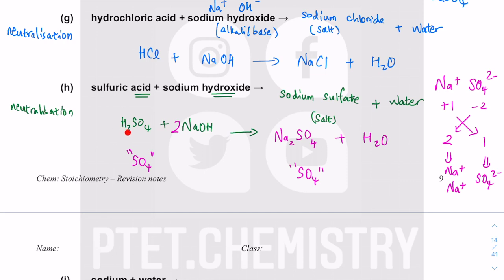With 2 NaOH, I now have 2 hydrogen from H2SO4 and 2 hydrogen from 2 NaOH, and 2 oxygen from the 2 OH− groups. That gives 2 H2O — 4 hydrogen and 2 oxygen — balancing both sides. The sulfate is already balanced. So the balanced equation is H2SO4 + 2NaOH → Na2SO4 + 2H2O.